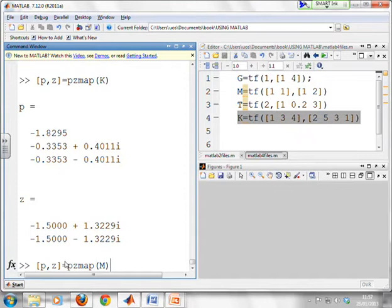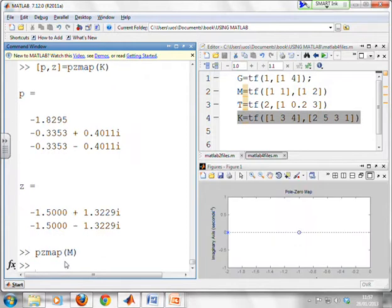So I'll go back to that command where we had pzmap of M. And what I will do is I'll remove the output arguments. So now I'm not asking for output arguments. So it says, alright, I'll just produce a figure. So there you go. You can see the figure has appeared.